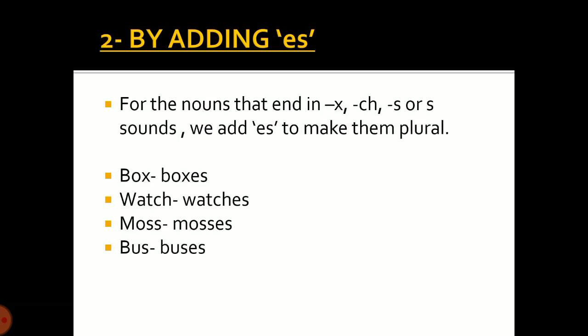The second rule is by adding the suffix es to the singular noun. For all those nouns that end in x, ch, or s sounds, we add es to make them plural. For example: the plural of box is boxes, the plural of watch is watches, the plural of moss is mosses, and the plural of bus is buses.